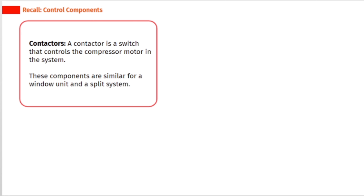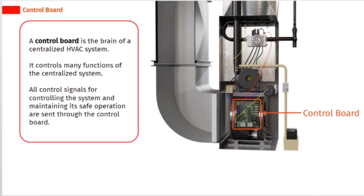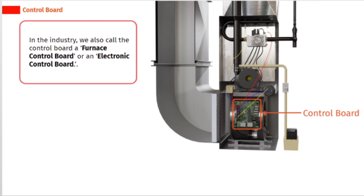These components are similar for a window unit and a split system. A control board is the brain of a centralized HVAC system. It controls many functions of the centralized system. All control signals for controlling the system and maintaining its safe operation are sent through the control board. In the industry, we also call the control board a furnace control board or an electronic control board.